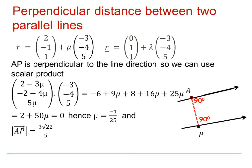Therefore, the shortest distance will be the magnitude of that vector, which is 3√22 over 5.